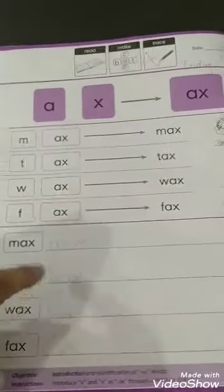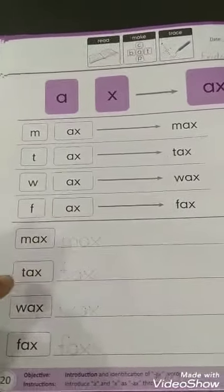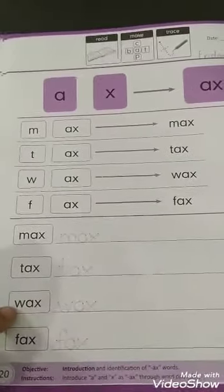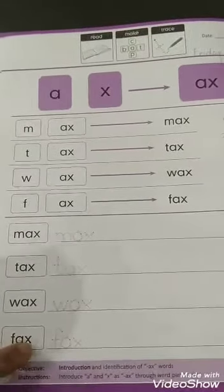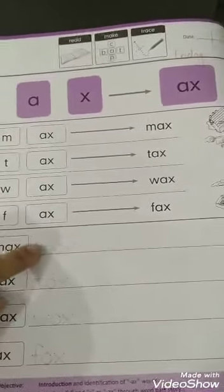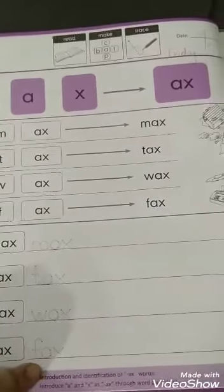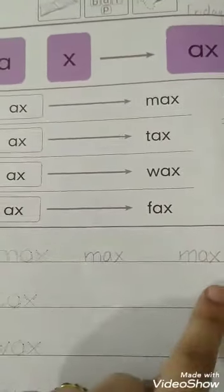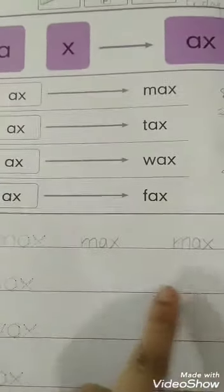Here we can read the words - X max, X tax, X vax, X fax. We just do dots write here. We can write two times, then two times we will write it on the side of it.